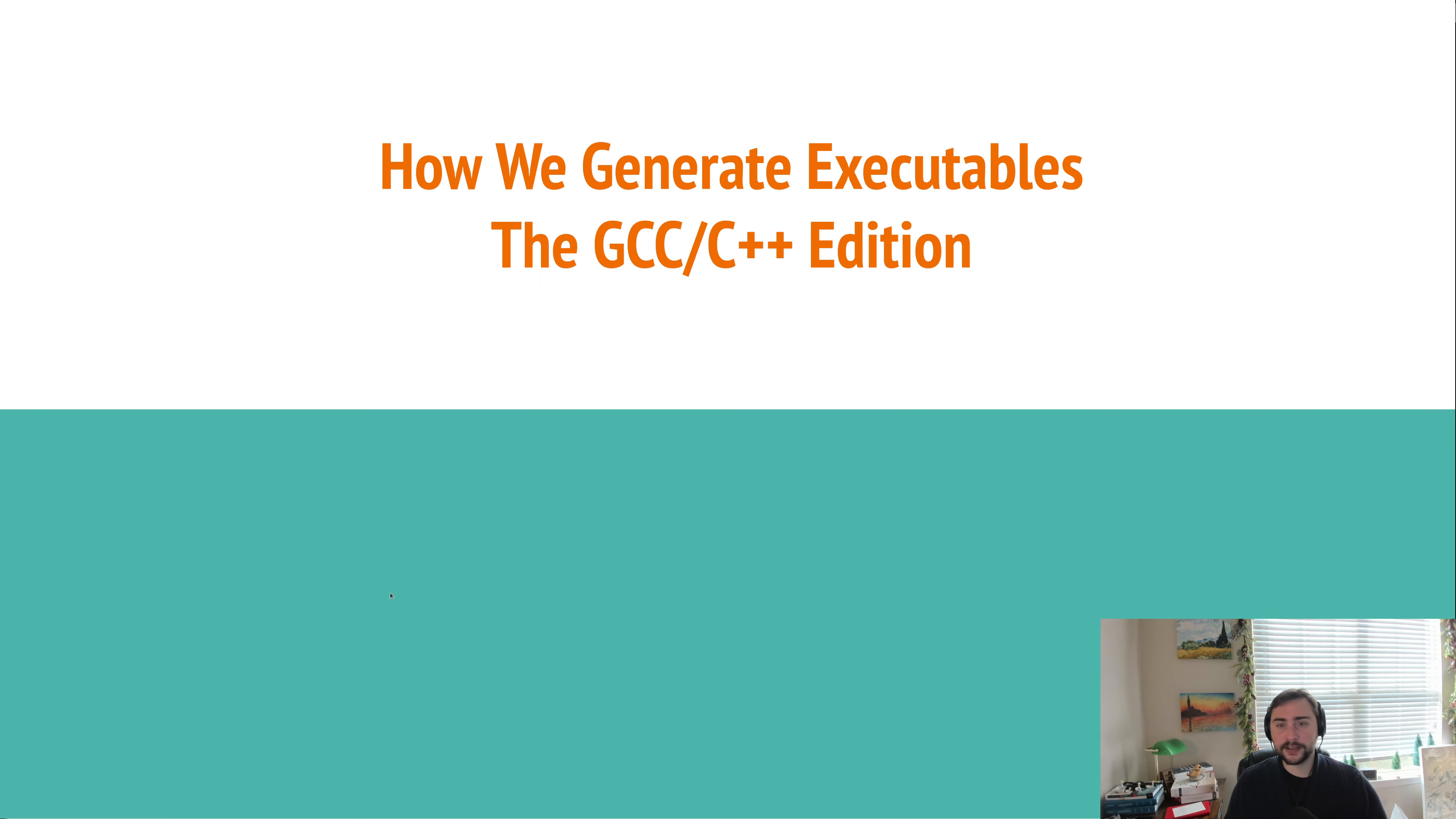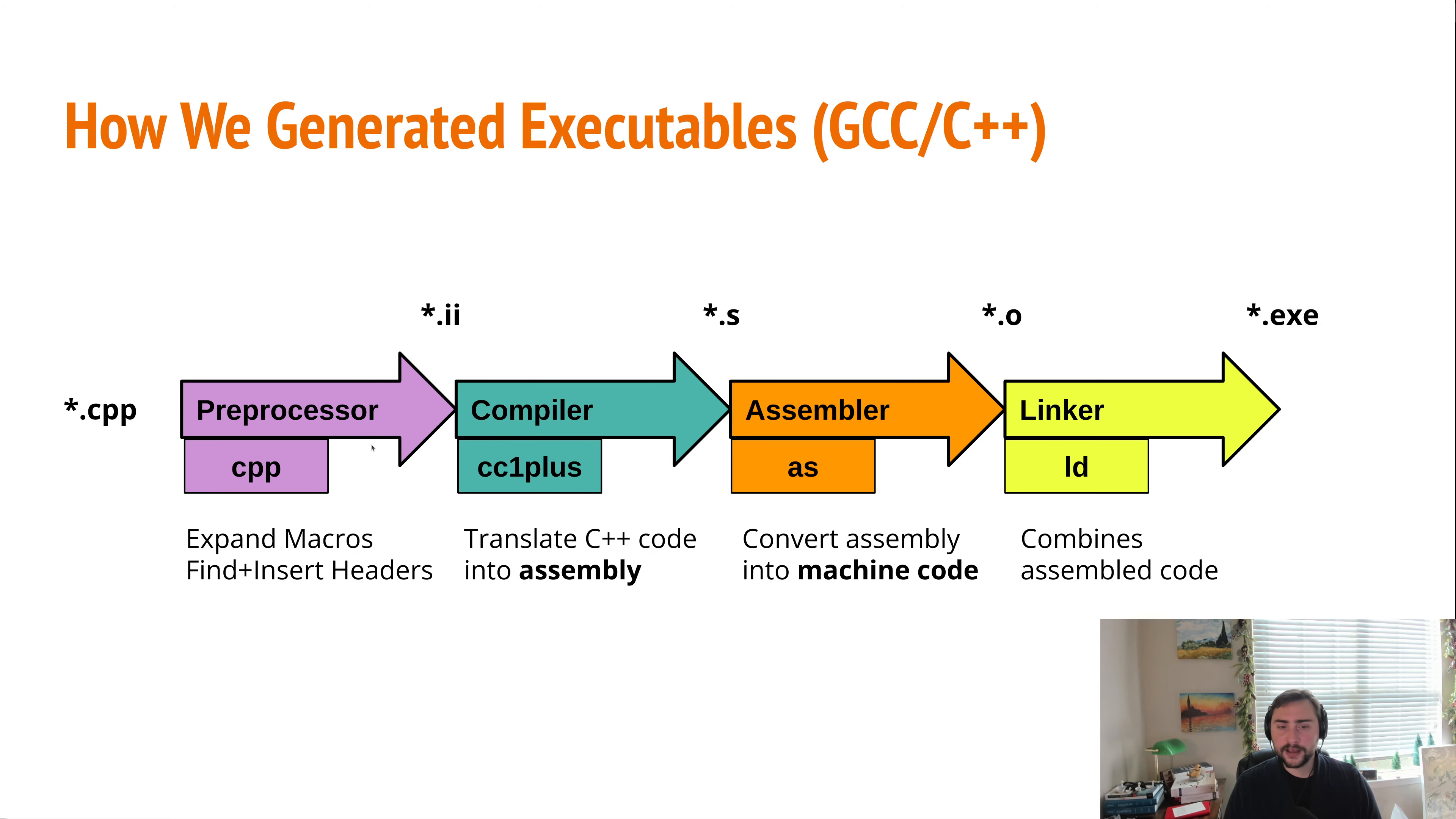And with that, we can talk about the basic process of how we actually generate executables. And this is specifically going to be how we go through this process with GCC and with C++ code, though the process is very similar for other languages. Okay, so at the very start of this process, we have our input files. These will be our C++ files. And the first step that generally goes on when we want to make an executable is a step called preprocessing.